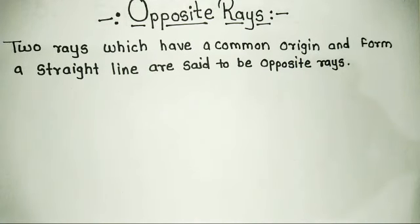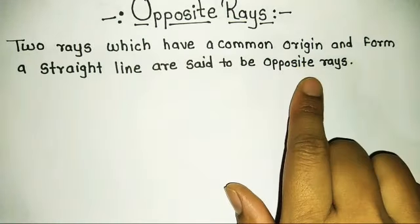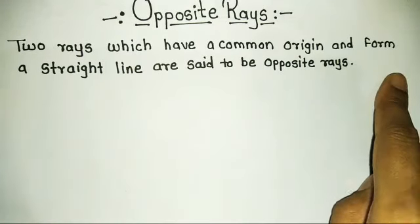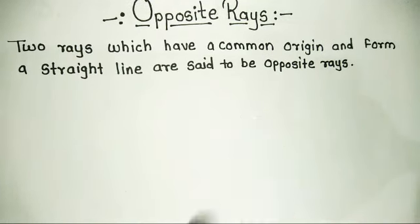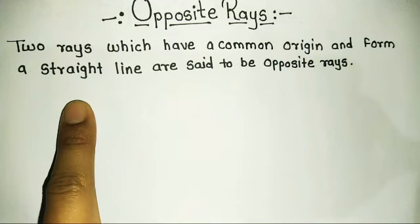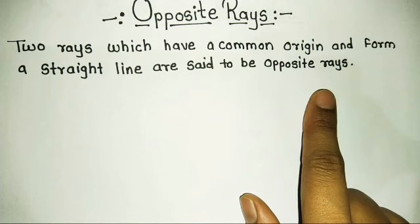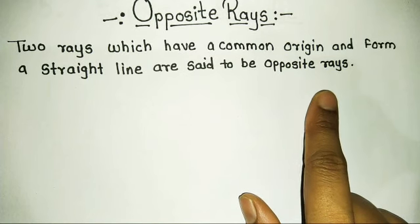Two rays that have a common origin and form a straight line are said to be opposite rays.